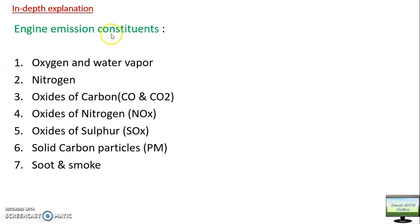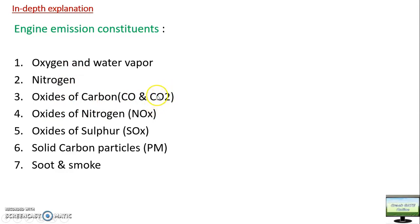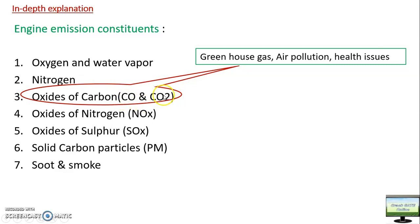Now, what are the constituents of engine emissions? These are the gases coming out of the engine exhaust after combustion: oxygen and water vapor; nitrogen in molecular form; oxides of nitrogen (NOx); oxides of carbon in both CO and CO2 form; oxides of sulfur (SOx); and solid carbon particulate matter, soot, and smoke. Oxygen is harmless; nitrogen in molecular form is harmless; water vapor, though a potent greenhouse gas, has a very short atmospheric life and is considered non-harmful. CO2 is a greenhouse gas contributing to air pollution, and CO is more harmful as it is poisonous and creates health problems.